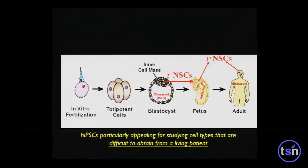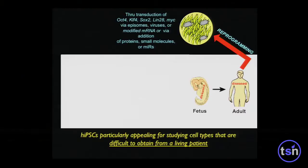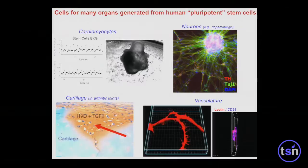The advent of IPS technology made it possible to get difficult-to-obtain cell types from living patients, which was a great advantage. We'll even hear about skipping the pluripotent stage and going directly from an accessible tissue to an inaccessible tissue, called transdifferentiation. Now one gets more than just the nervous system — if you know the right recipe, you can get whatever cell type is of interest to you or the particular disease.